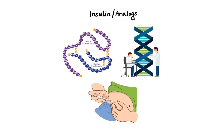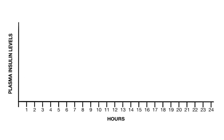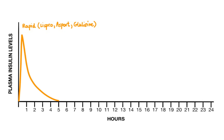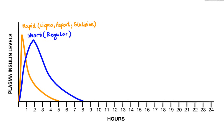Insulin preparations are generally divided into three major categories based on how quickly and how long they work. First, we have rapid and short acting insulins. Insulin Lispro, Insulin Aspart, and Insulin Glulisine are considered rapid acting, producing peak effect in as quickly as 30 minutes and duration of action of up to 5 hours. Regular insulin is considered short acting, with peak effect as quick as 2 hours and duration of action usually less than 8 hours.